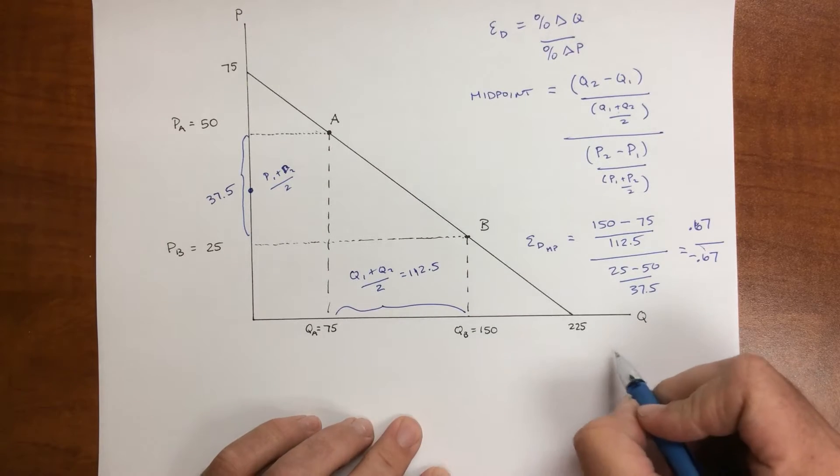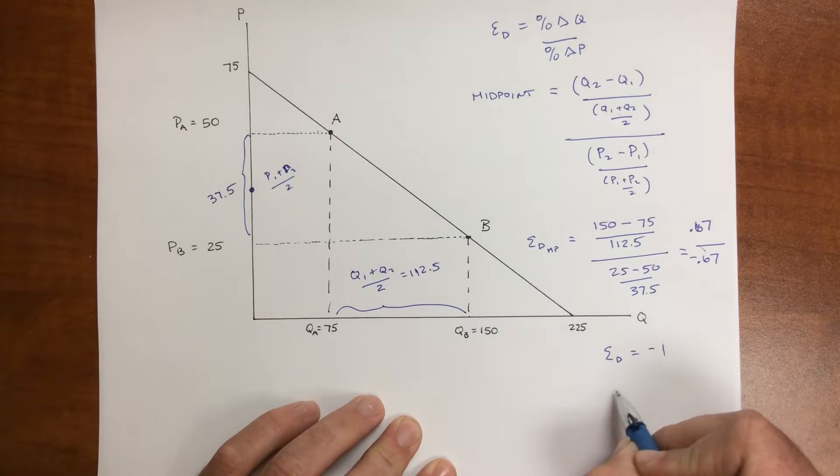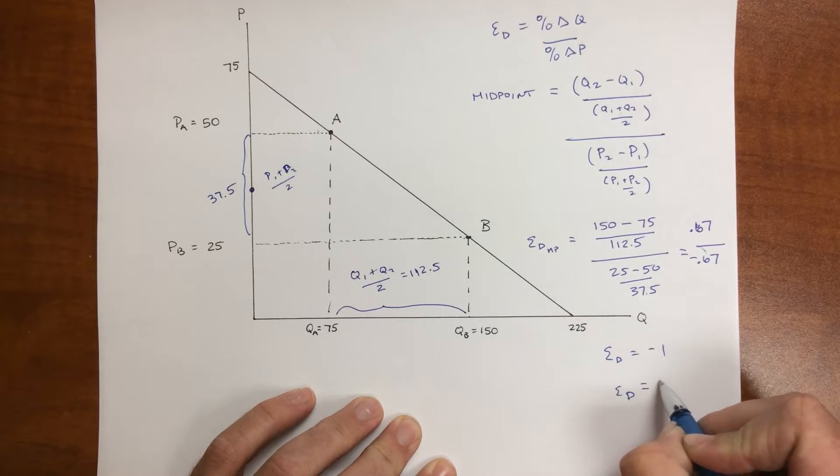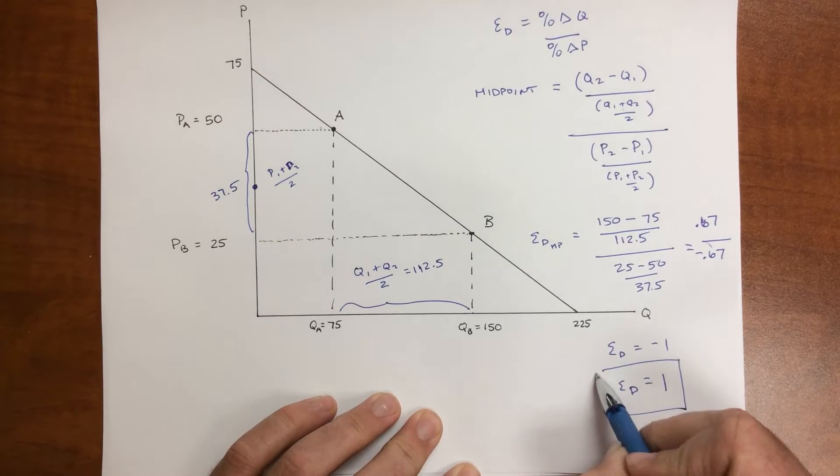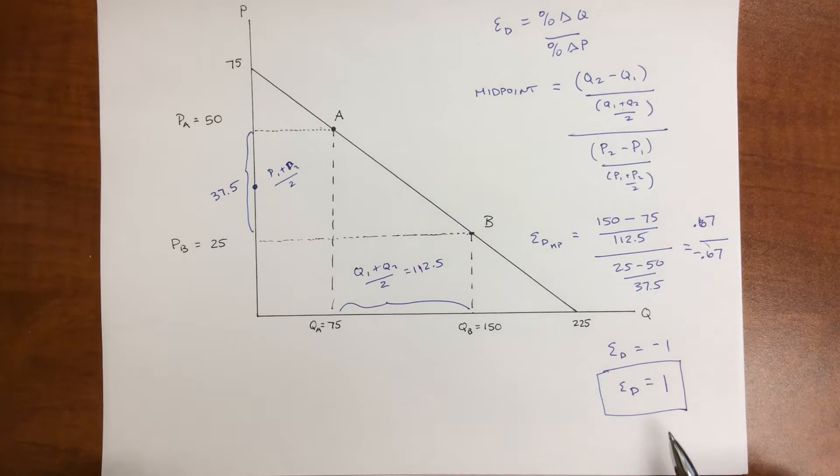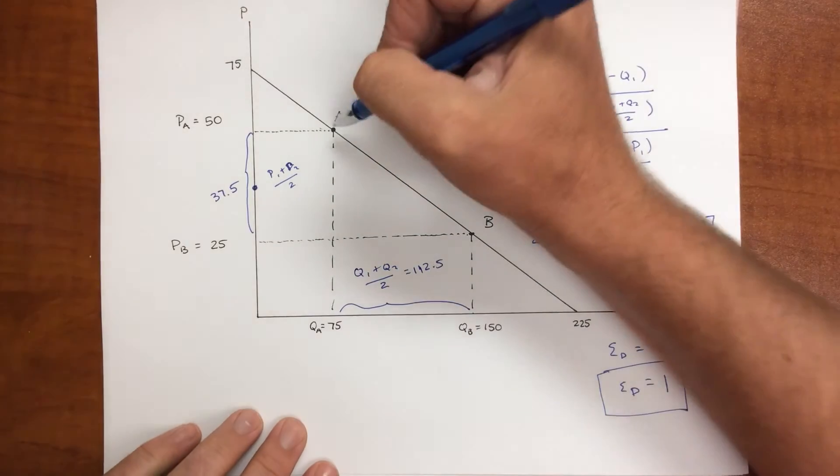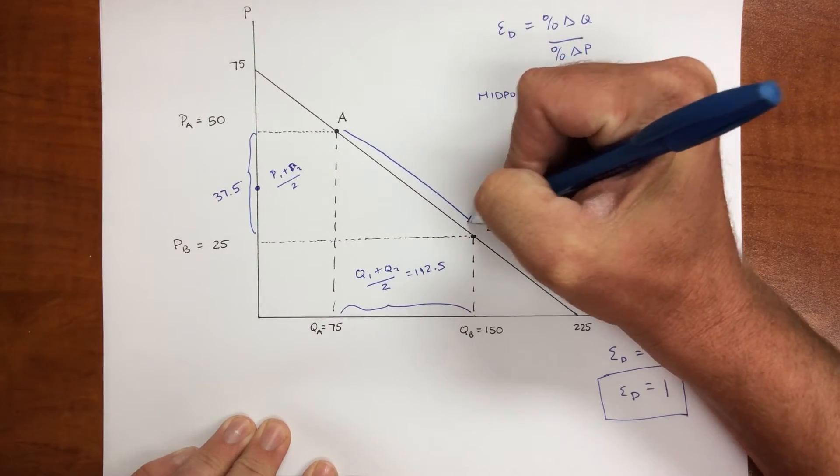And so this tells me that my elasticity of demand is equal to negative 1. In this class, we'll just call that, and using this book, we'll just call that 1. And now the reason why the midpoint method is so nice is this is going from point A to point B.